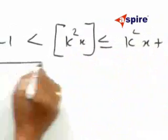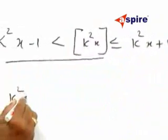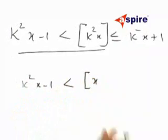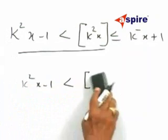Now, we will deal with the left-hand side. That is, k²x - 1 < ⌊k²x⌋.